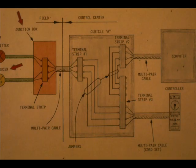Here is another example of an instrument loop. Locate the field items: the transmitter, the I to P, and the junction box.